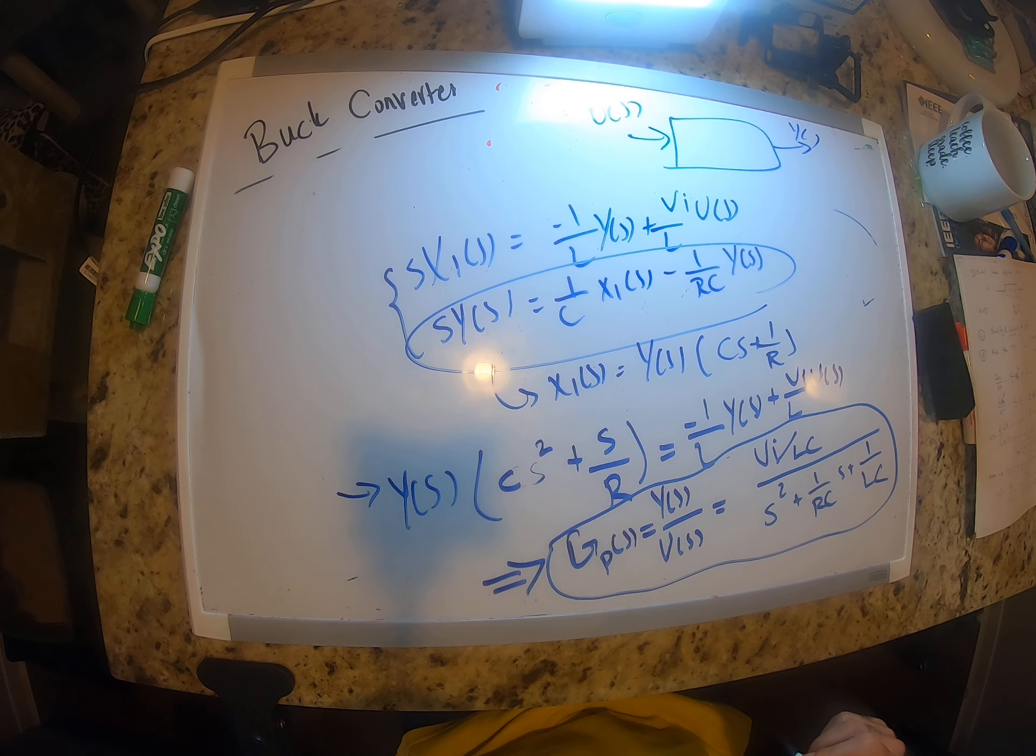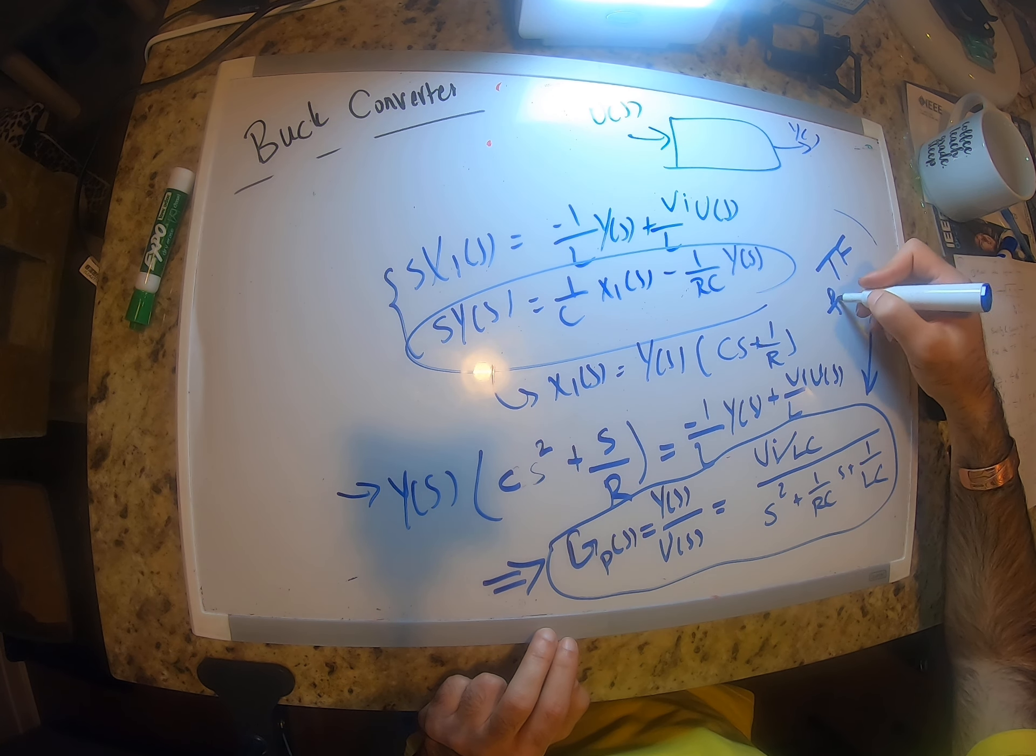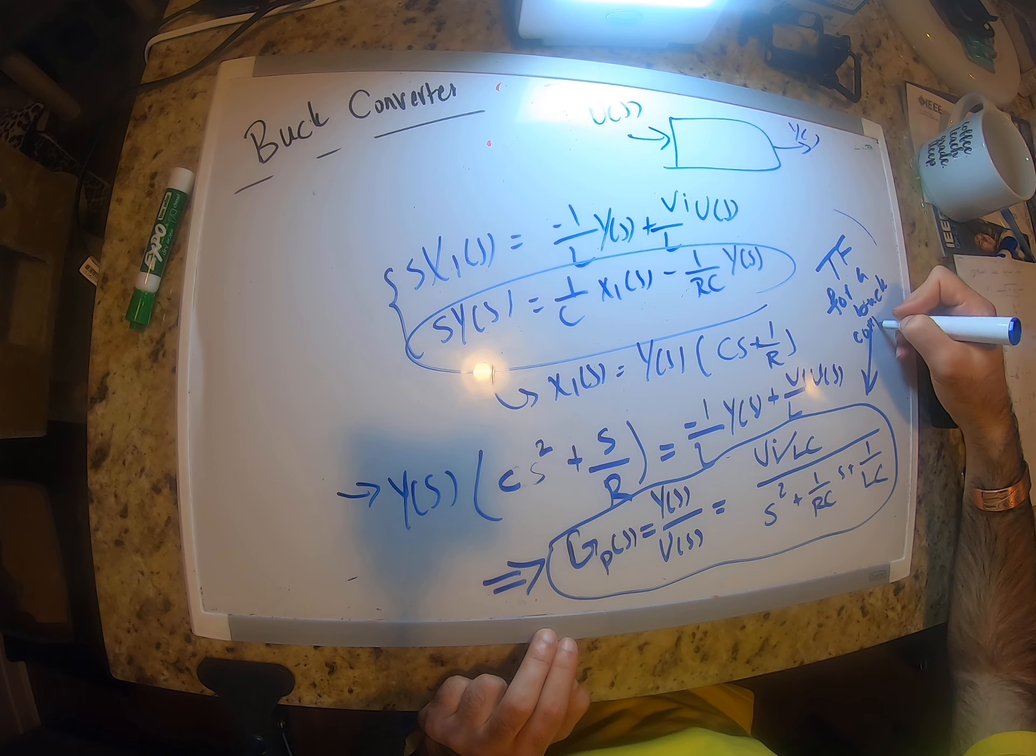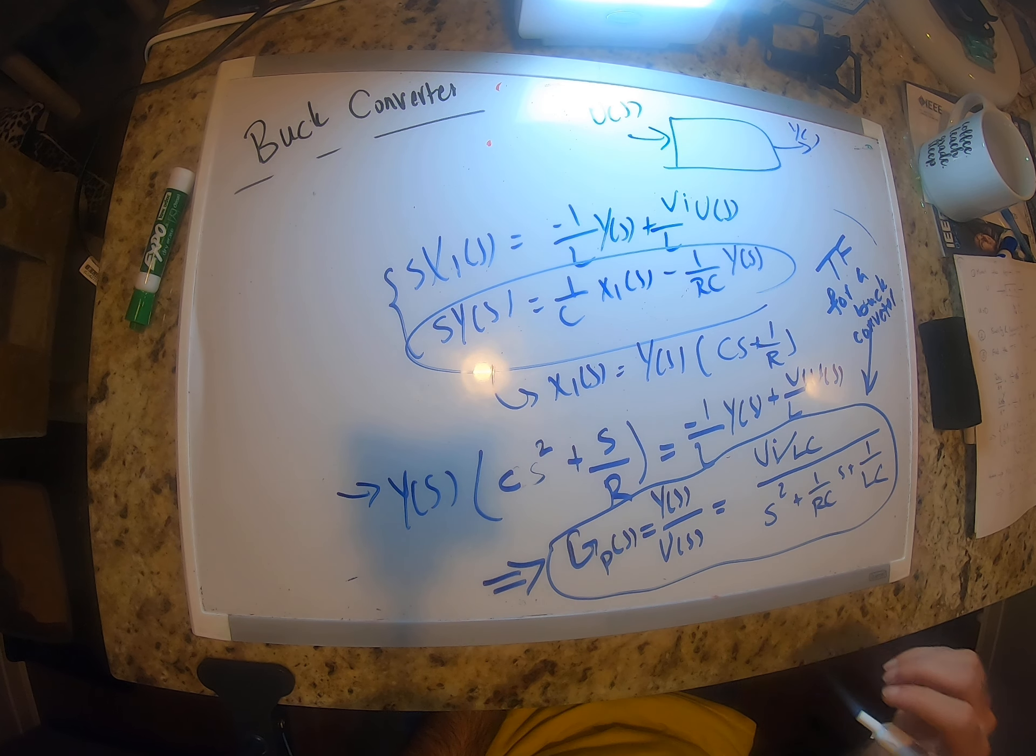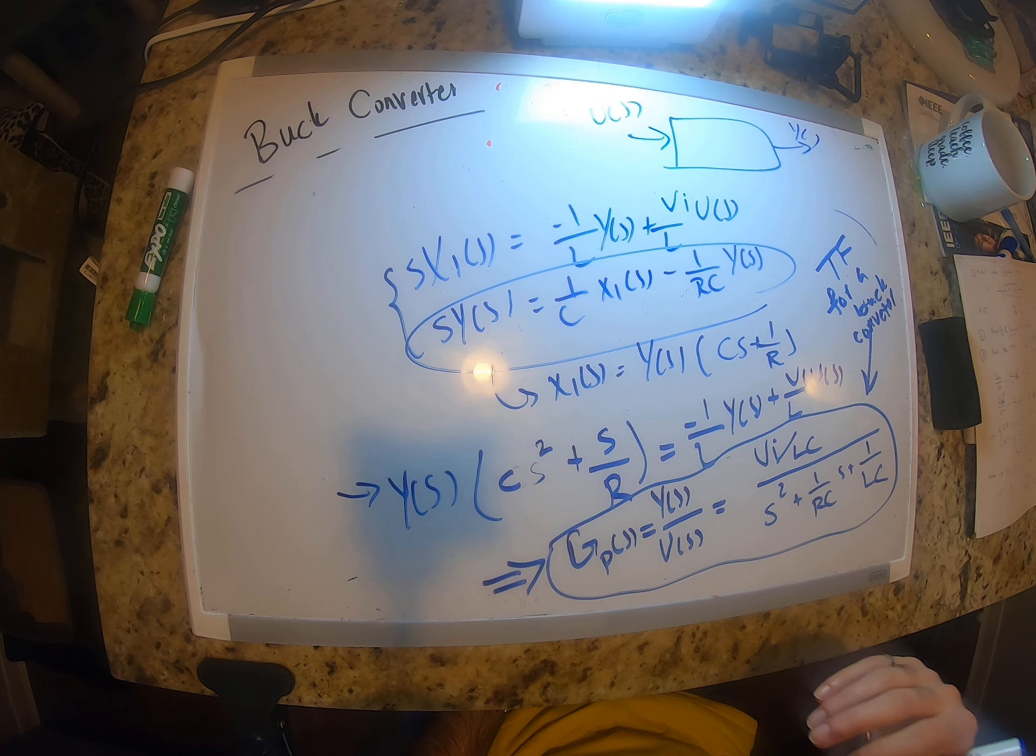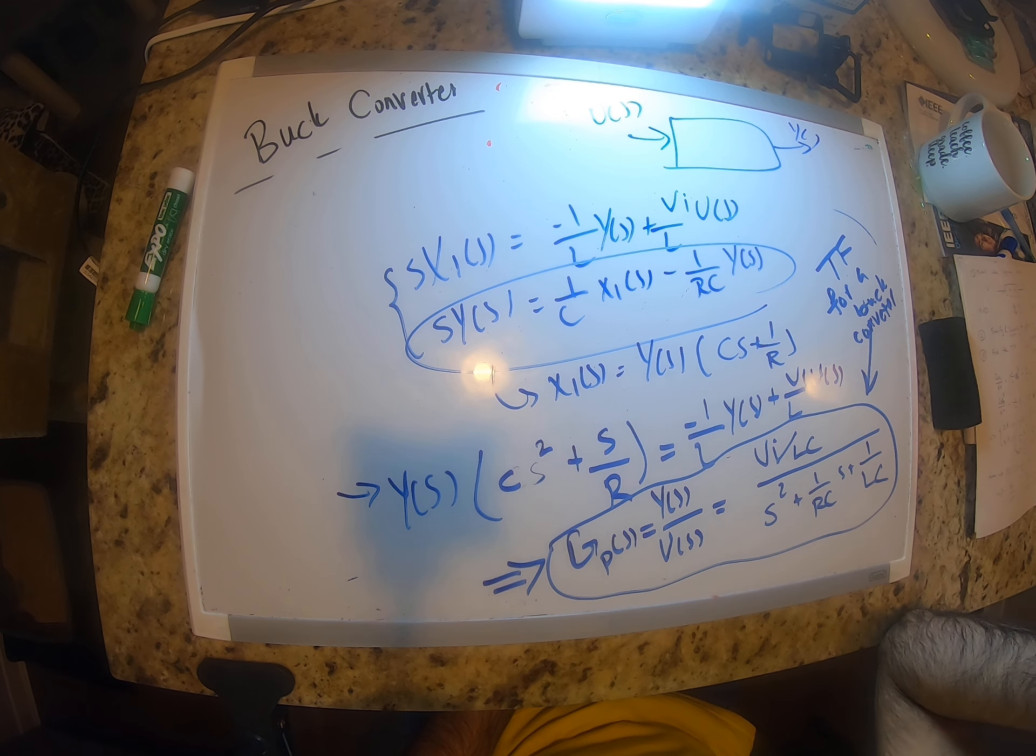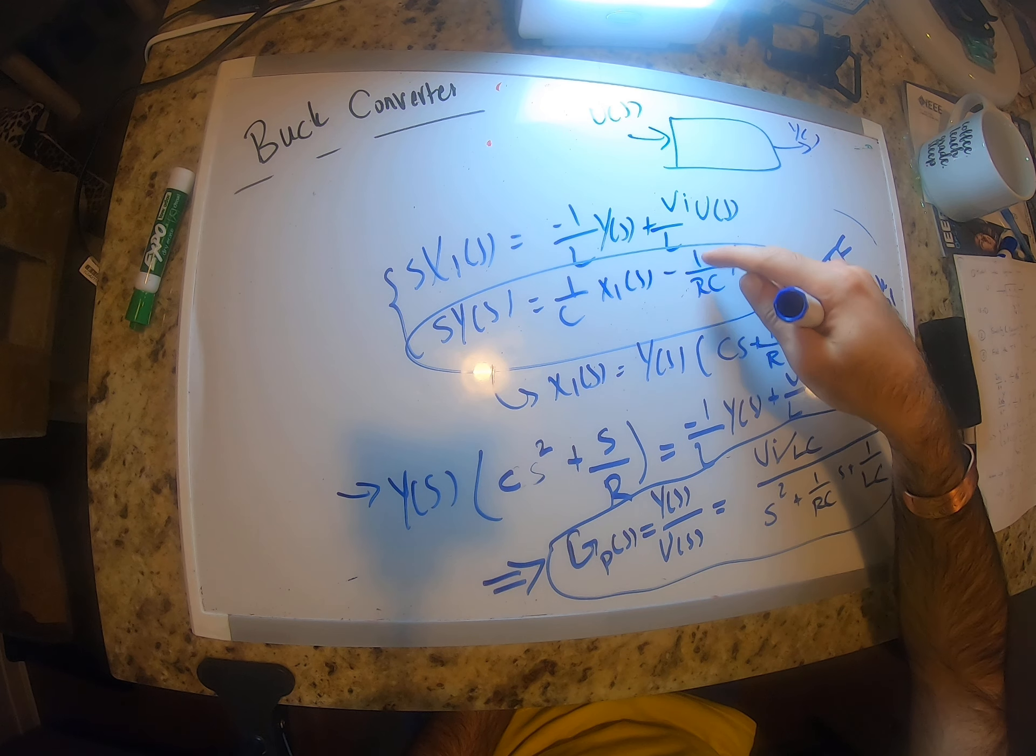Okay, so this is the transfer function for a buck converter. You can apply the same method to find the transfer function for a boost converter, for buck-boost converter. It's the same, exactly the same method. You choose iL and vC as your parameters, you come up with two equations.